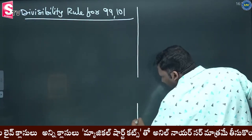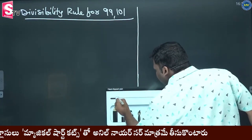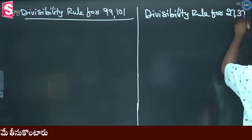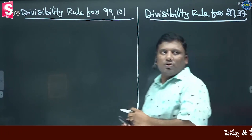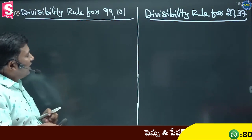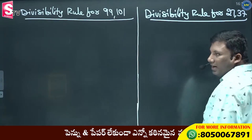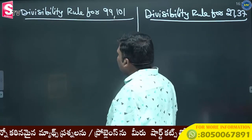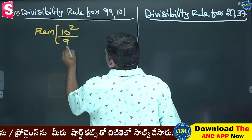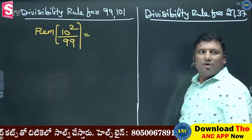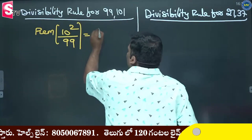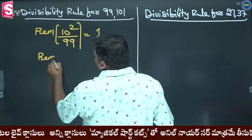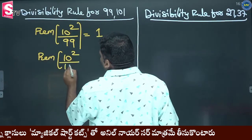9901. Divisibility Rule for 2737. 100 divided by 99 — that is 10 square divided by 99. And 10 square divided by 101.